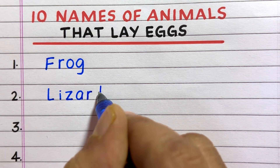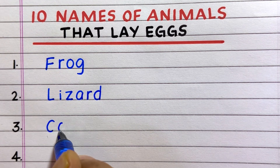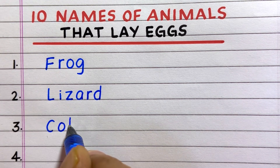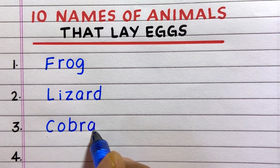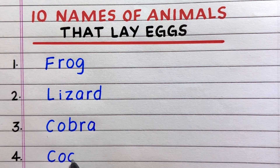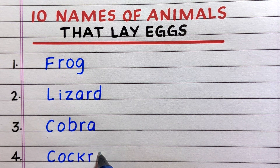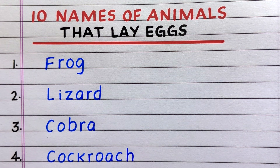First, an animal that lays eggs is frog. Second, lizard. Third, cobra. Fourth, cockroach.